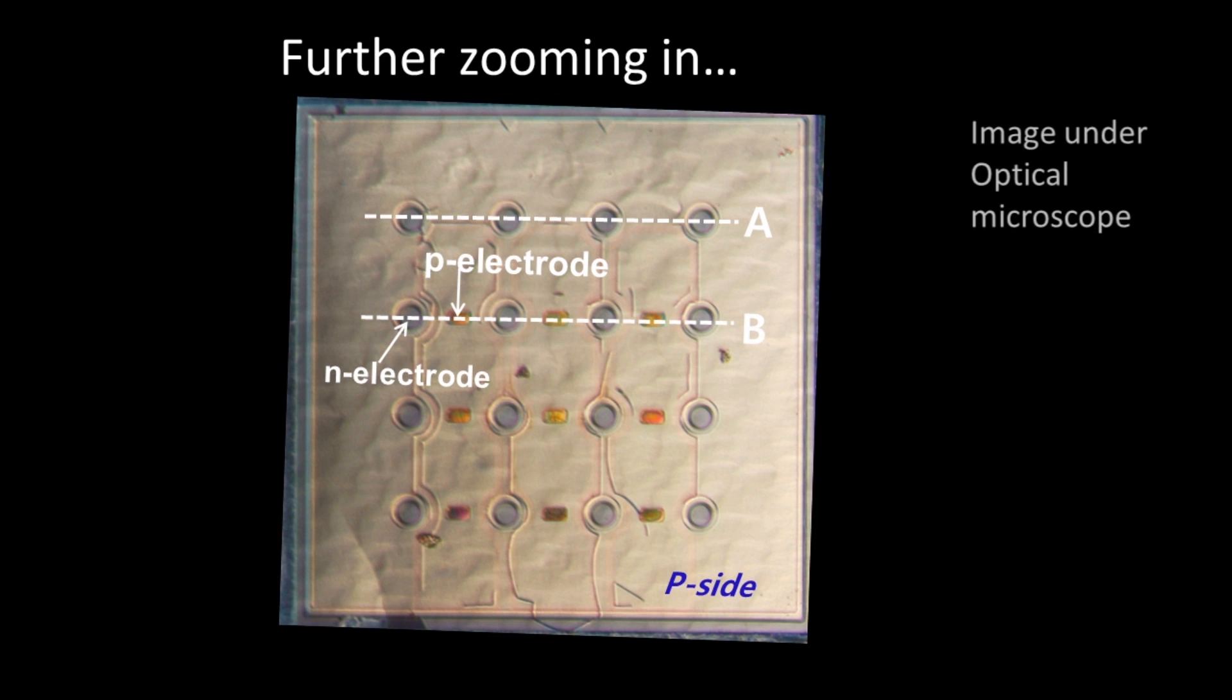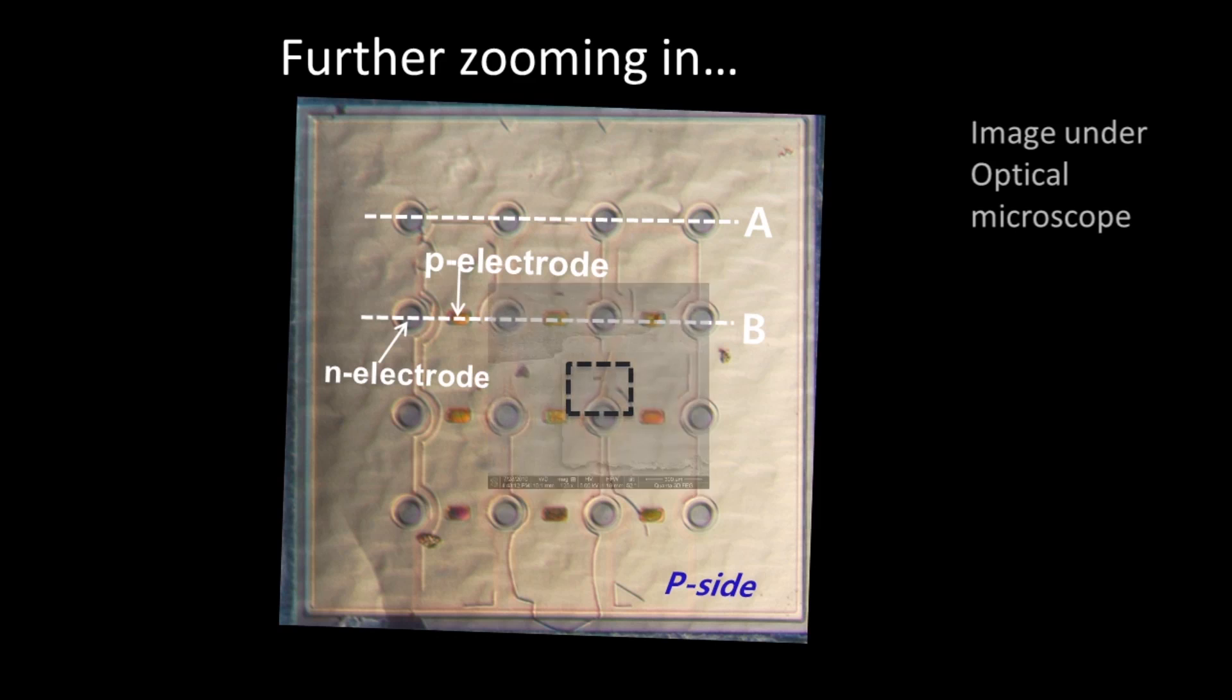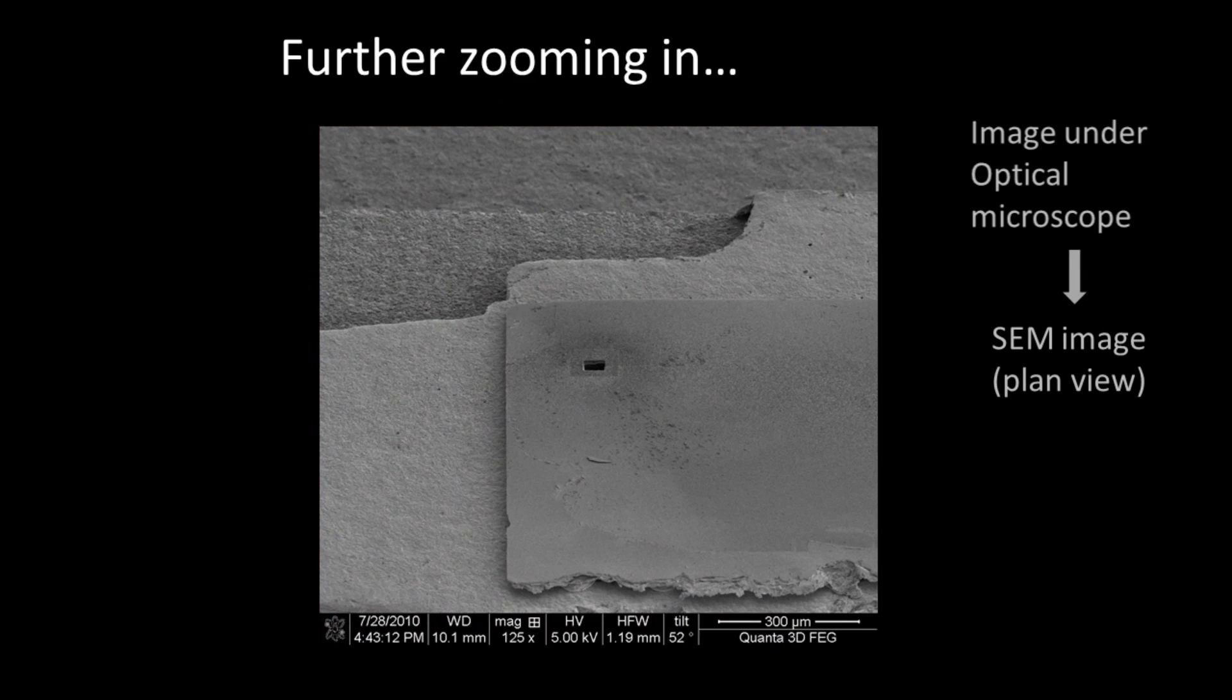Let's zoom in a bit further. So we were looking under an optical microscope but we can look at a small area of the LED under an electron microscope. This is an image from a scanning electron microscope looking at the top surface of the LED in plan view.